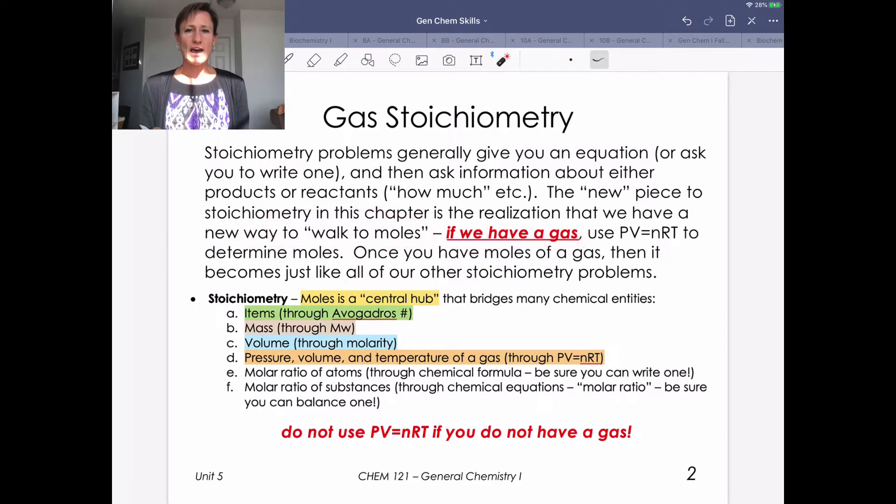If we have a gas, and I'm going to kind of highlight this in multiple places, do not use PV equals NRT if you do not have a gas. But if you do have a gas, and you know the pressure, volume, and temperature of that gas, you can figure out the quantity of gas that you have in moles.